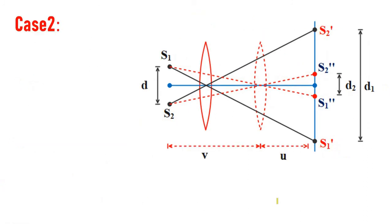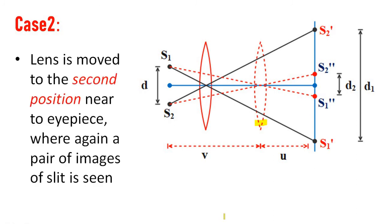Now case 2. The lens is moved towards position 2. The lens is moved to the second position near to the eyepiece, where again a pair of images of the slit is seen.